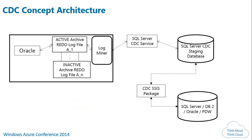For an Oracle source, you set archive log to true, get privileges to read the log miner — a powerful auditing tool — and then run the SQL Server CDC Service. That service takes changes and puts them onto a staging database; from there you run an SSIS package to push changes to the final destination. Importantly, the destination need not be SQL Server — you can move from Oracle OLTP to DB2, Oracle, or PDW (Parallel Data Warehouse).